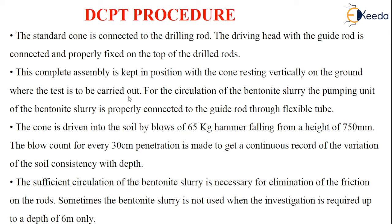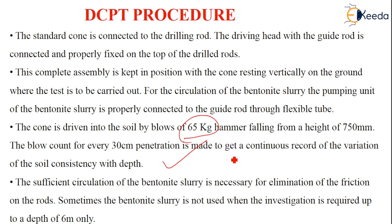For circulation of bentonite slurry, a pumping unit is connected to the guide rod through a flexible tube. The cone is driven into the soil by blows of a 65 kg hammer falling from a height of 750 mm, and the blow count for every 30 cm penetration is recorded to get a continuous record of soil consistency with depth. Sufficient circulation of bentonite slurry is necessary to completely eliminate friction of the rods. However, slurry is not used when the investigation is required only up to a depth of 6 meters.